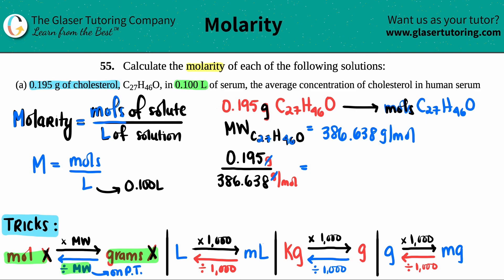Three sig figs: 5.04 × 10⁻⁴ moles of C₂₇H₄₆O. Now I have the top number, 5.04 × 10⁻⁴ moles, and I'm ready to calculate my molarity. M equals the moles which we just found, 5.04 × 10⁻⁴...